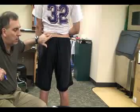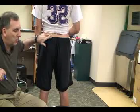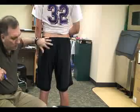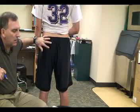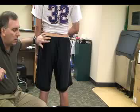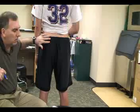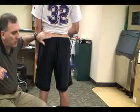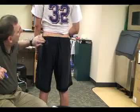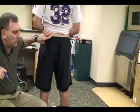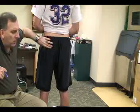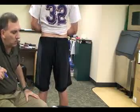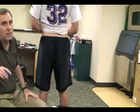Next we're going to palpate the ischial tuberosity, which is located in the middle of the buttock approximately at the level of the gluteal fold. Sometimes if you place your fingers on the greater trochanter and then bring them over to the ischial tuberosity, it should be horizontal — also horizontal to the lesser trochanter.